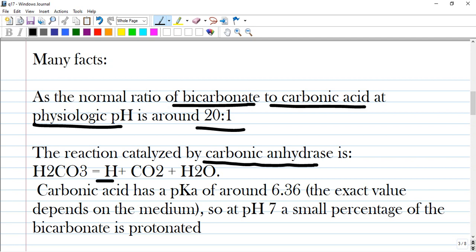So carbonic acid has a pKa of around 6.36. The exact value depends on the medium. So at pH 7 a small percentage of the bicarbonate is protonated.